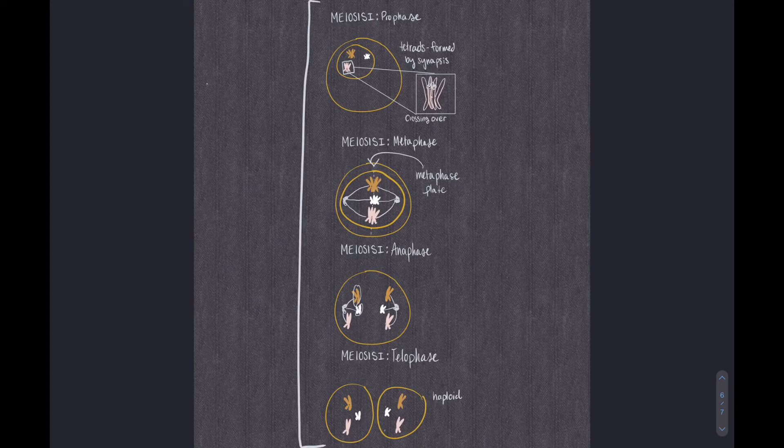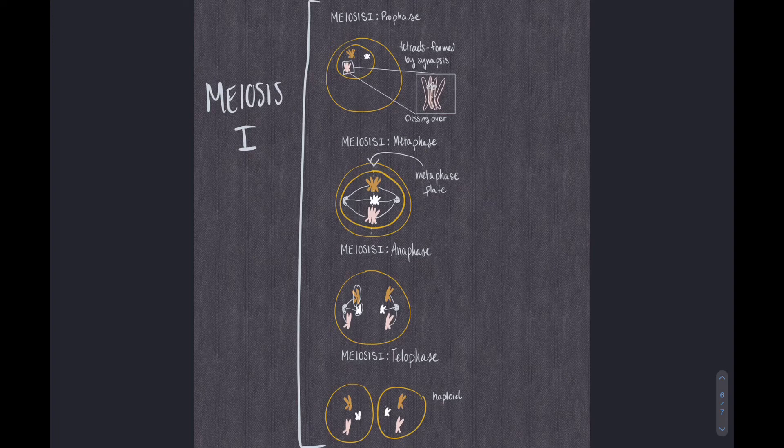Okay, everything we just talked about is considered meiosis I. Prophase, metaphase I, anaphase I, and telophase I. But we're still not done yet, because each cell still has a pair of sister chromatids.